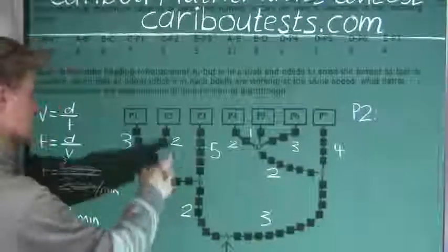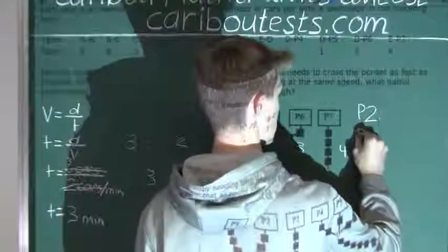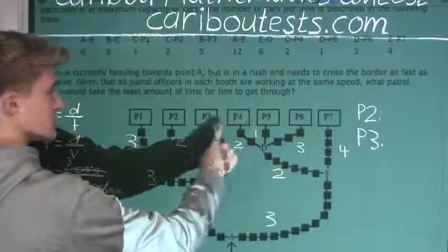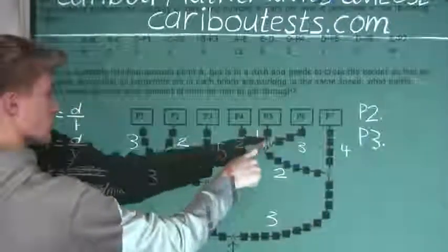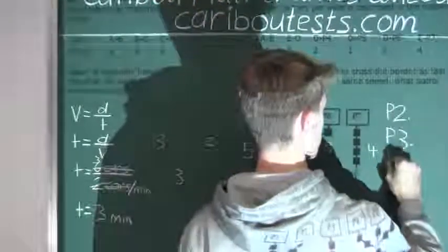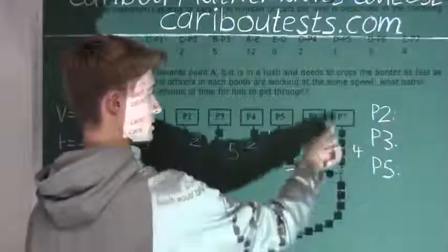And then P3 because it's on its own. And P5 because out of these three booths, this only has one, whereas the others have two and three. So P5. And P7 because it's on its own.